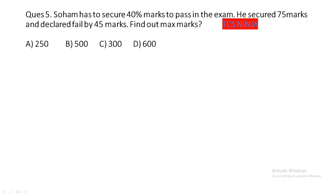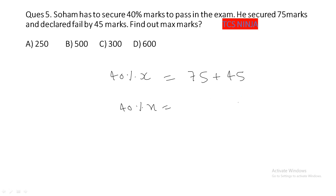The next question: Soham has to secure 40 percent marks to pass an examination. He scored 75 marks and was declared fail by 45 marks. Find the maximum marks. The passing marks are 40 percent of x. Soham scored 75 marks but failed by 45, so passing marks equal 75 + 45 = 120. Therefore 40 percent of x equals 120, giving x = 120 upon 40 into 100 = 300. The maximum marks are 300.